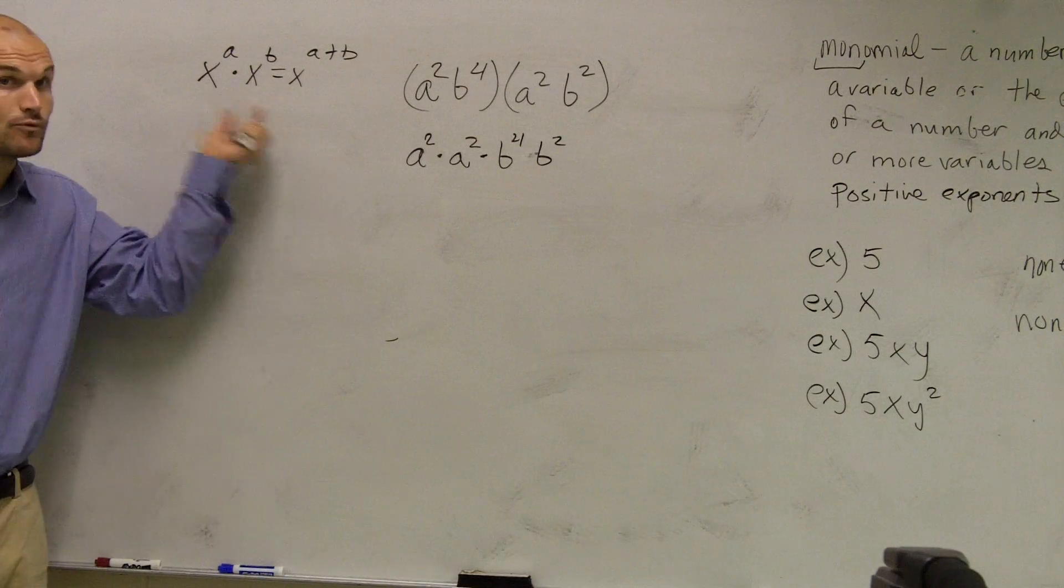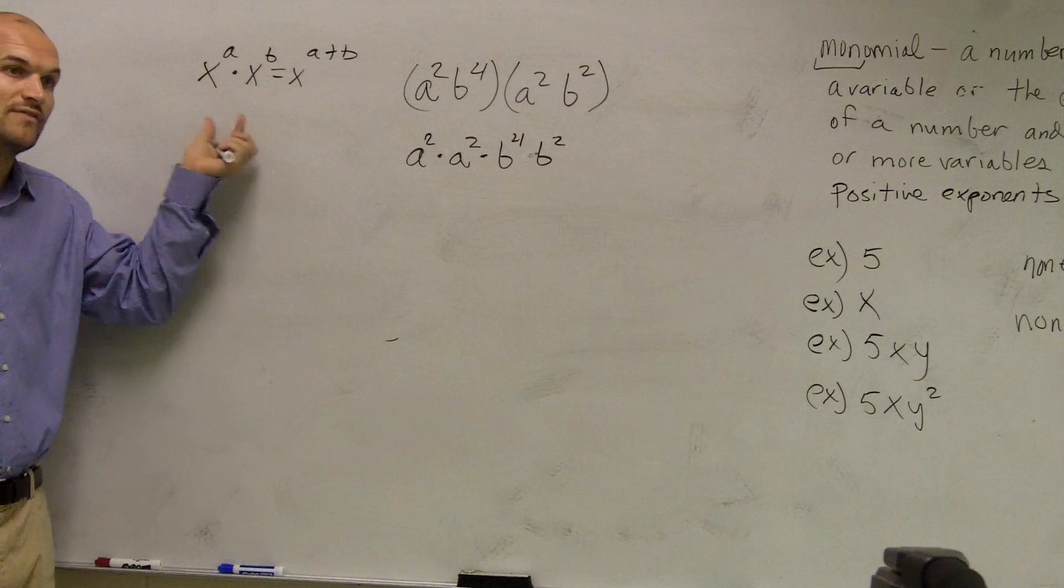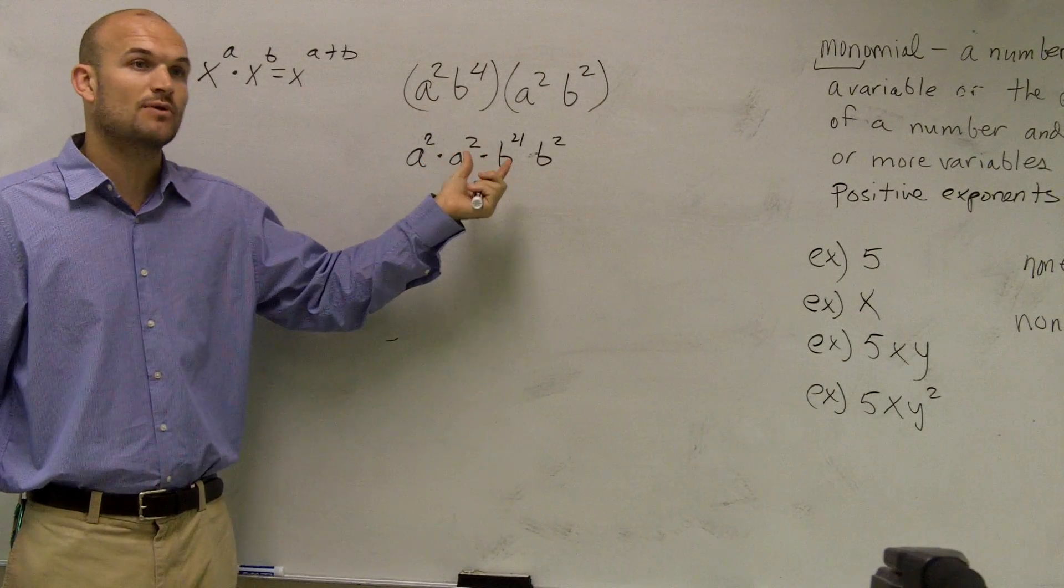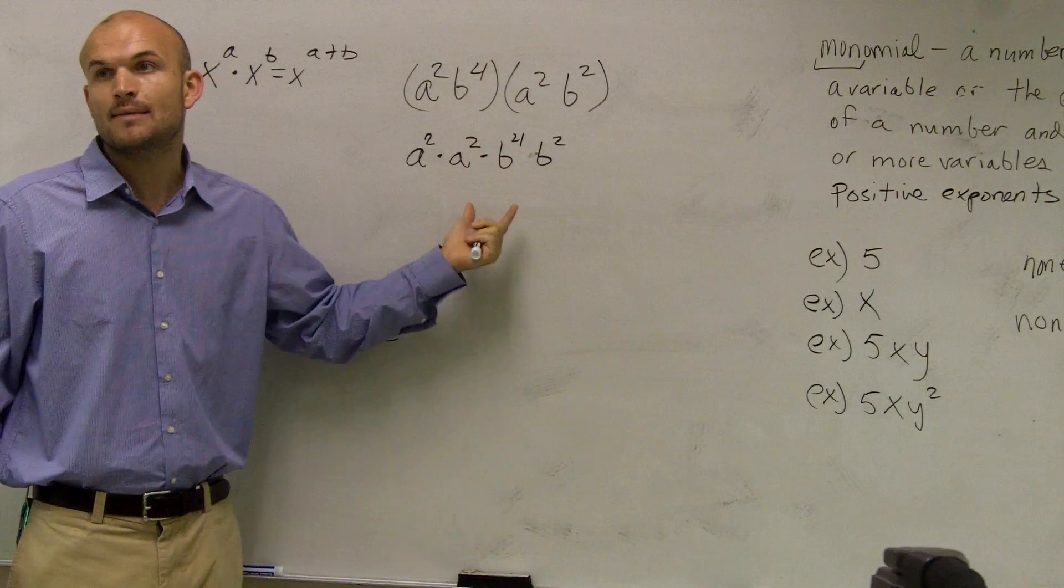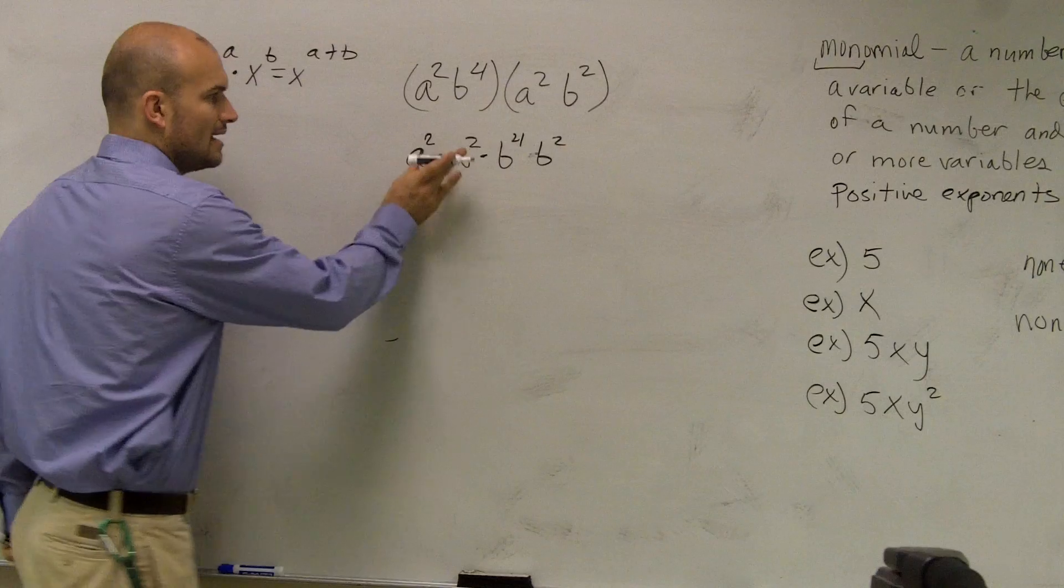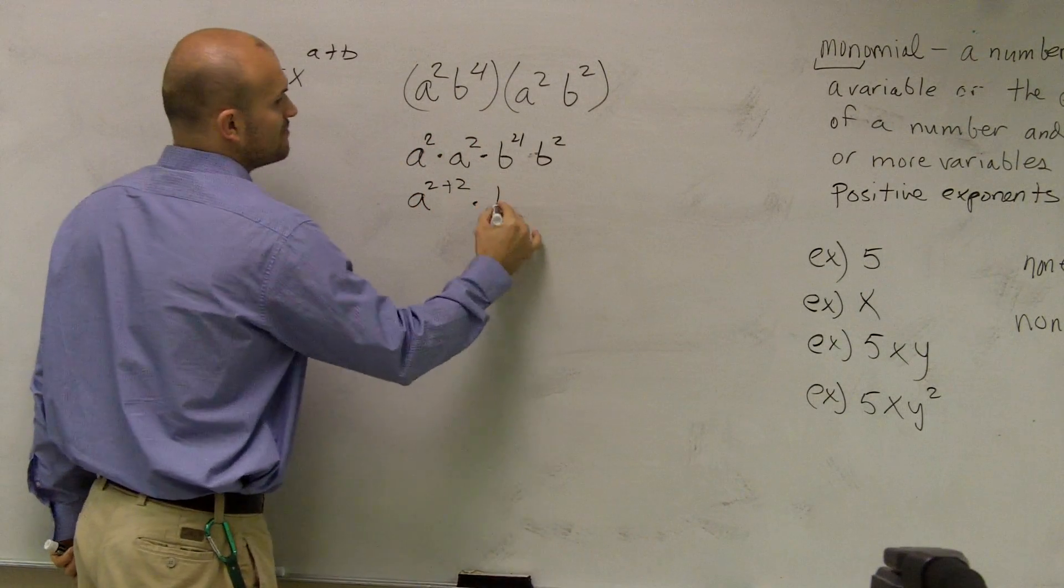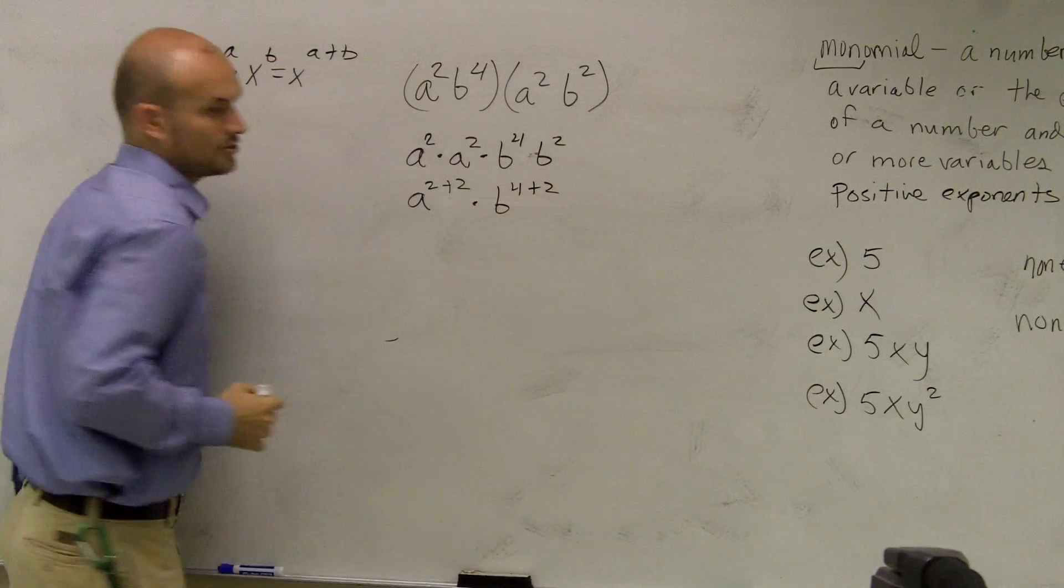Because following my rule, like I said, the rule of exponents tells us we can only add your exponents when you multiply when you have the same base. So now, a squared times a squared means a to the 2 plus 2 times b to the 4 plus 2.